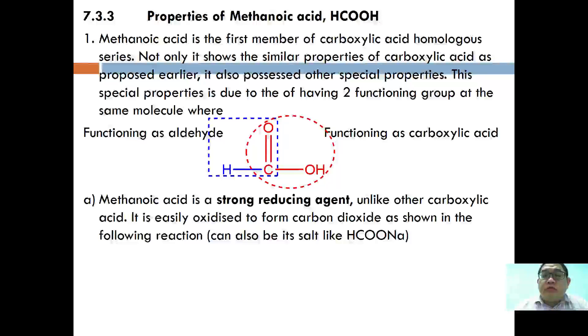We are going to continue with the third video for carboxylic acid and derivatives. We will continue with properties of methanoic acid. Methanoic acid is the first member of the carboxylic acid homologous series. Not only does it show similar properties to carboxylic acid, it also possesses other special properties.